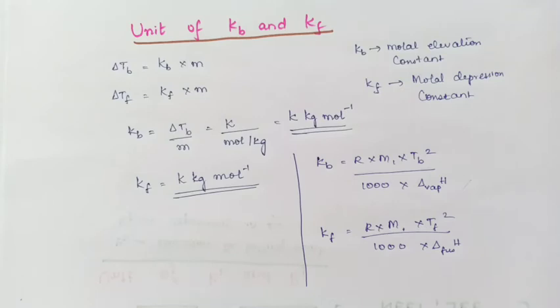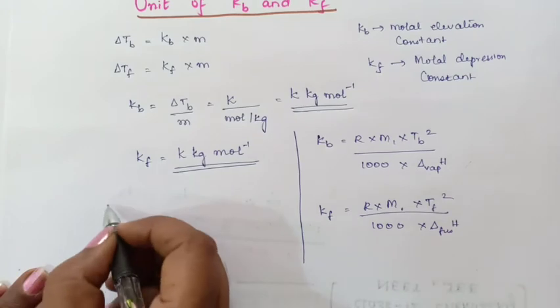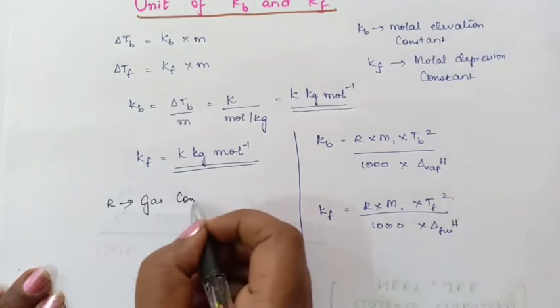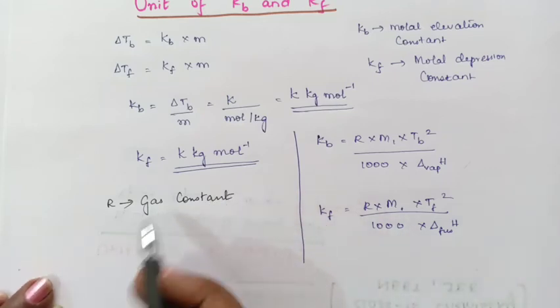So which you need to remember. This will be very useful for your examination. So let me tell you what are these terms. R is called as gas constant. The value for gas constant is 8.314.